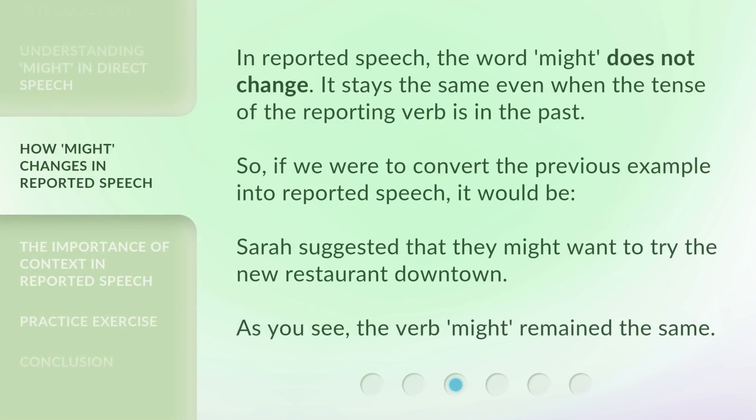In reported speech, the word 'might' does not change. It stays the same even when the tense of the reporting verb is in the past. So, if we were to convert the previous example into reported speech, it would be: 'Sarah suggested that they might want to try the new restaurant downtown.' As you see, the verb 'might' remained the same.